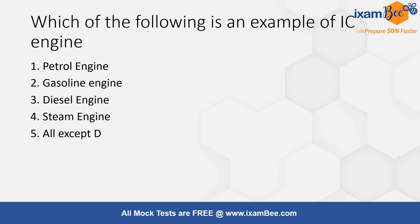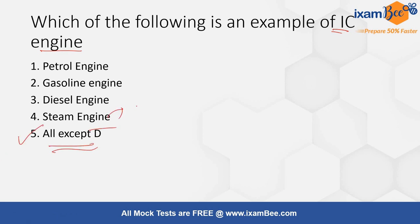Next: which of the following is an example of an IC engine? IC means internal combustion engine. Options are petrol engine, gasoline, diesel engine, steam engine, or all except D. The correct answer is option 5, all except D, because the steam engine is an example of an external combustion engine as it requires an external chamber to carry out the combustion process.